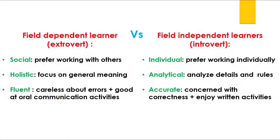First, there is the field-dependent and field-independent style. Field-dependent learners are social, holistic, and fluent. They prefer to work with others in pairs or in groups. They do not pay attention to details; they are more interested in the general idea of the message. They do not pay attention to rules and are careless about errors. They are fluency-oriented and they like oral communication activities such as dialogues, role plays, and conversations. Field-independent learners are the opposite. They are analytical, individual, and accurate. They prefer to work individually, mostly silently analyzing rules and structures of language. They pay more attention to details while reading or listening, prefer written activities where they apply language rules, and when they speak, they are brief, to the point, and accurate.